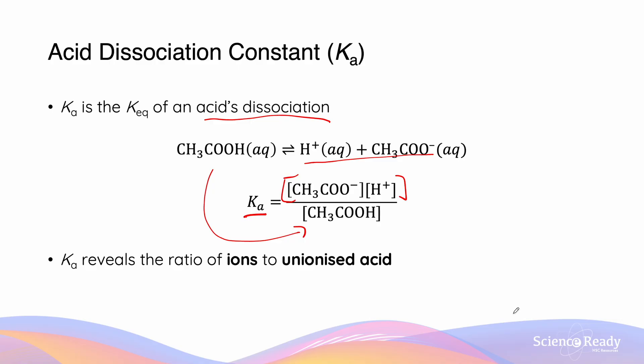Ka is an indicator of the acid's strength. If the acid is really strong, we should expect there to be no remaining reactants, meaning technically we get an infinitely large Ka for strong acids. Similarly, if Ka is smaller, that means it's a weaker acid because there are fewer products relative to reactants.